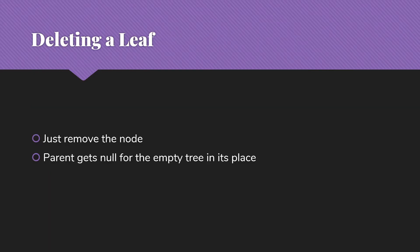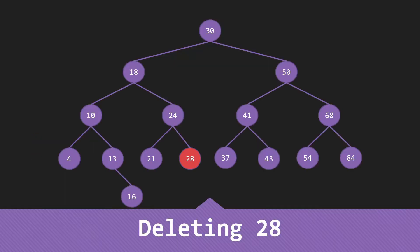Deleting a leaf: we're simply going to remove the node. The parent gets null for the empty tree in place of the node that was deleted. In this particular case, an example of deleting the 28 — I search down and see that the 24 has the 28 as its child. I simply replace that right child with null for the empty tree, and the 28 is gone.